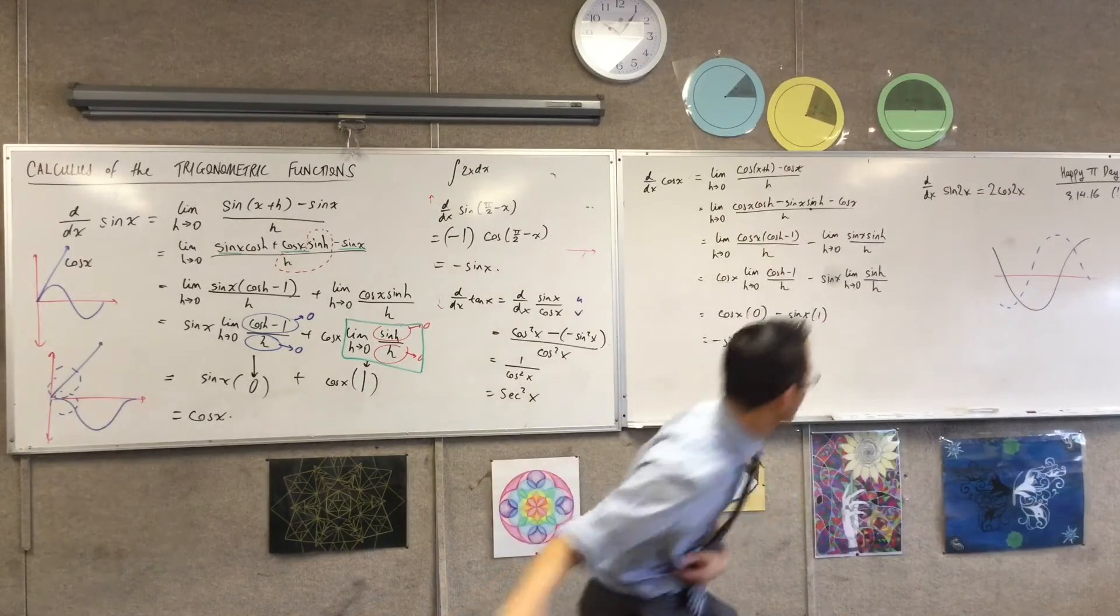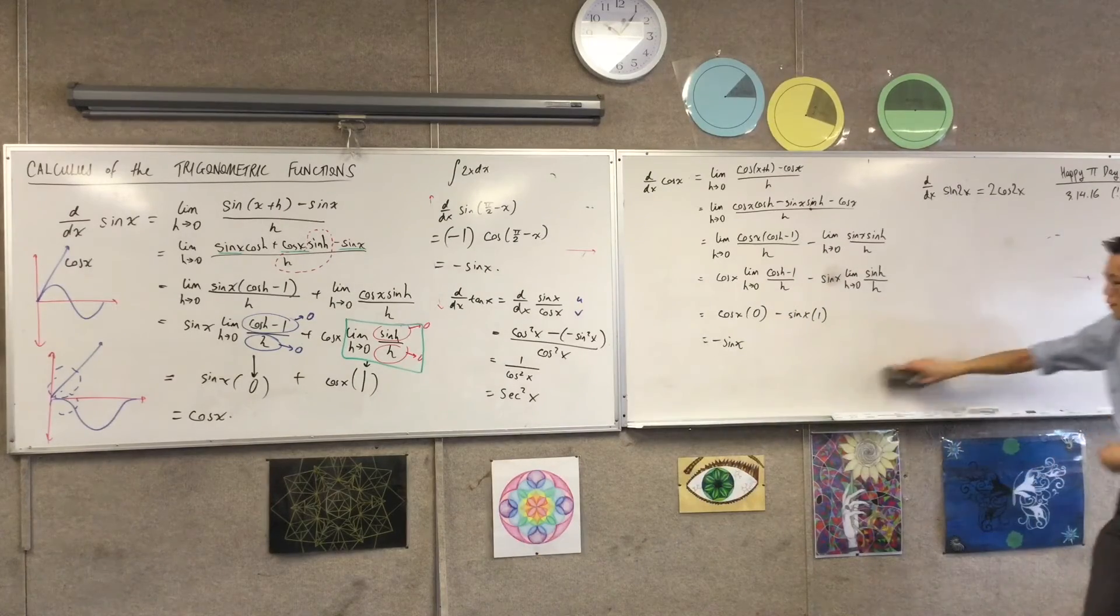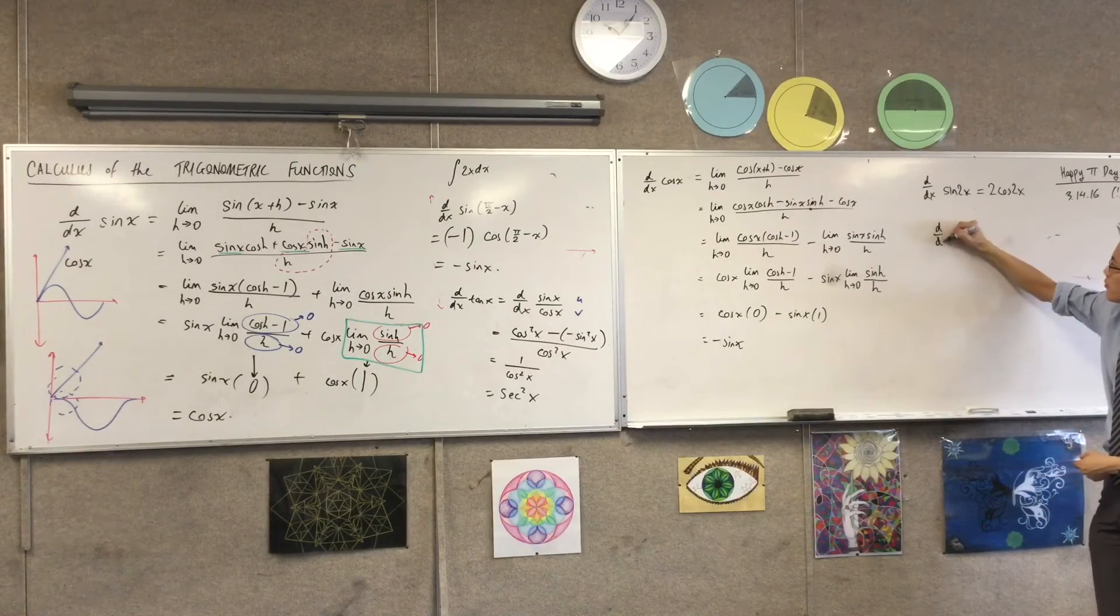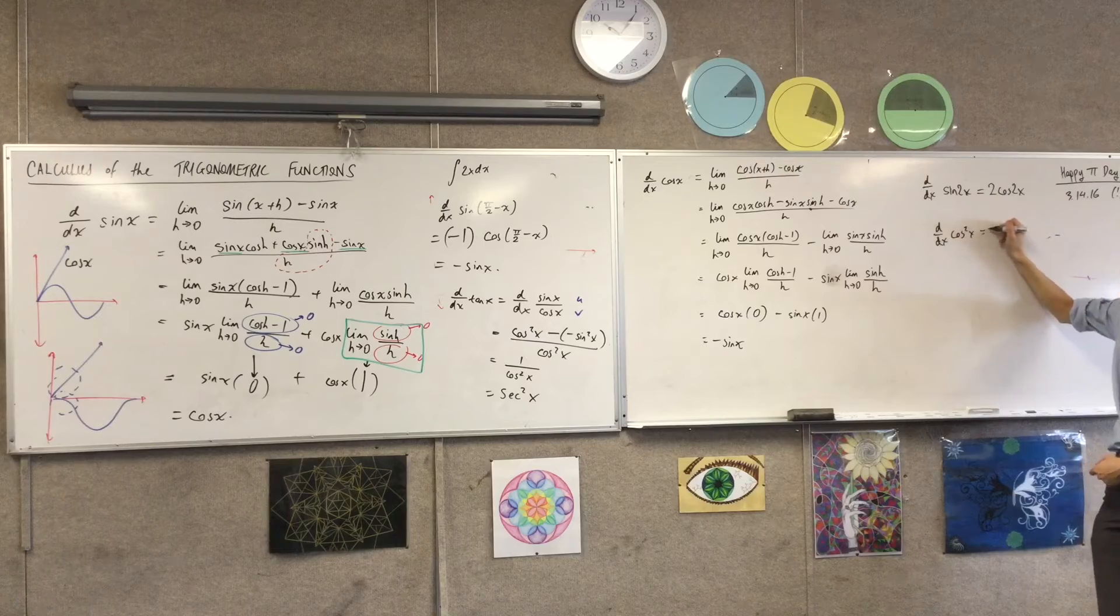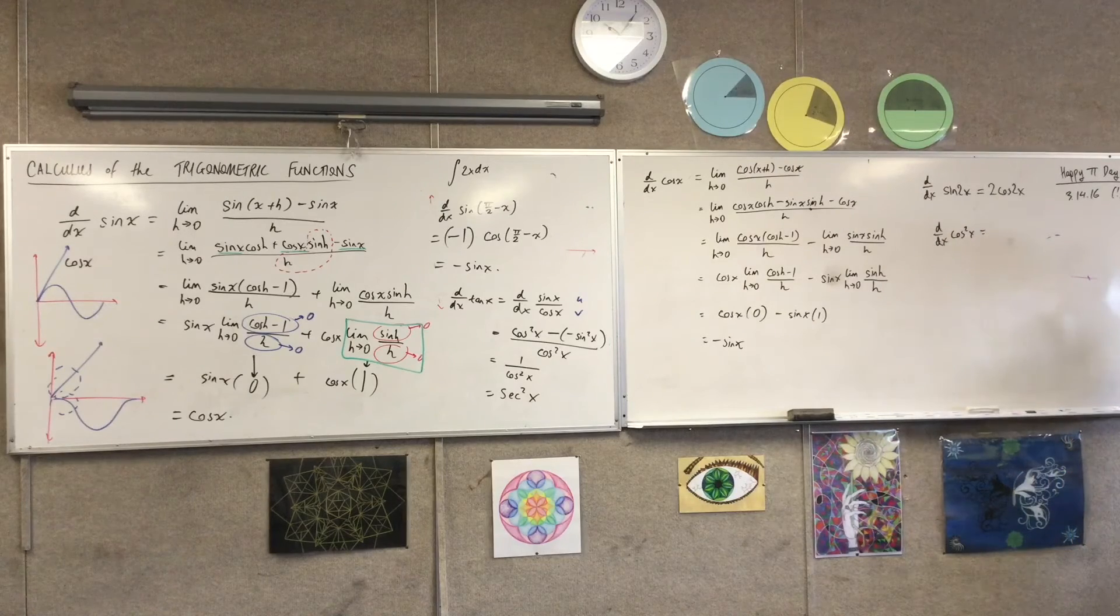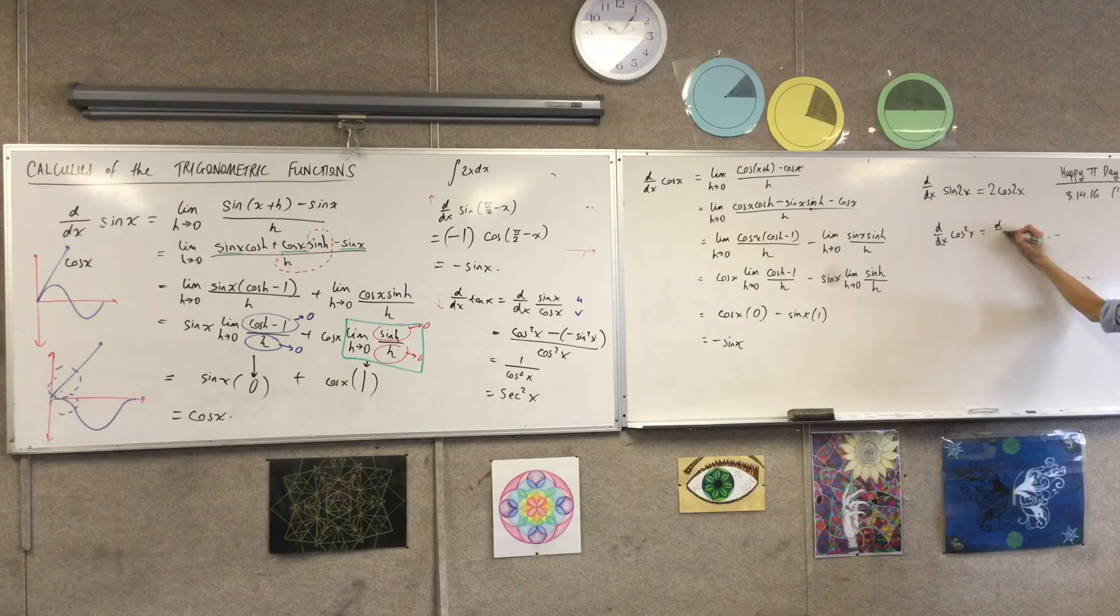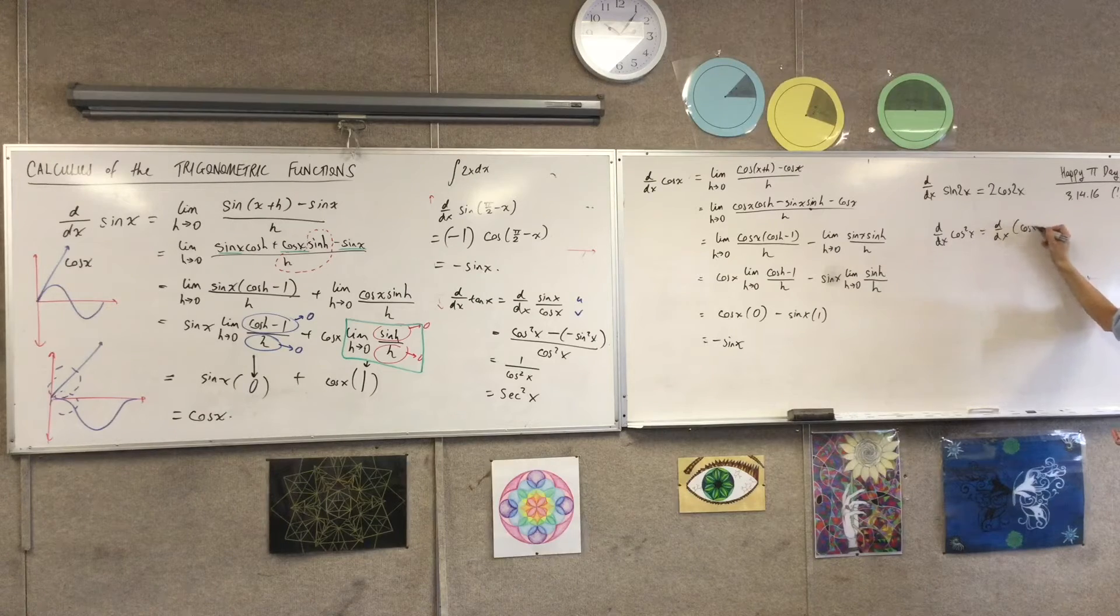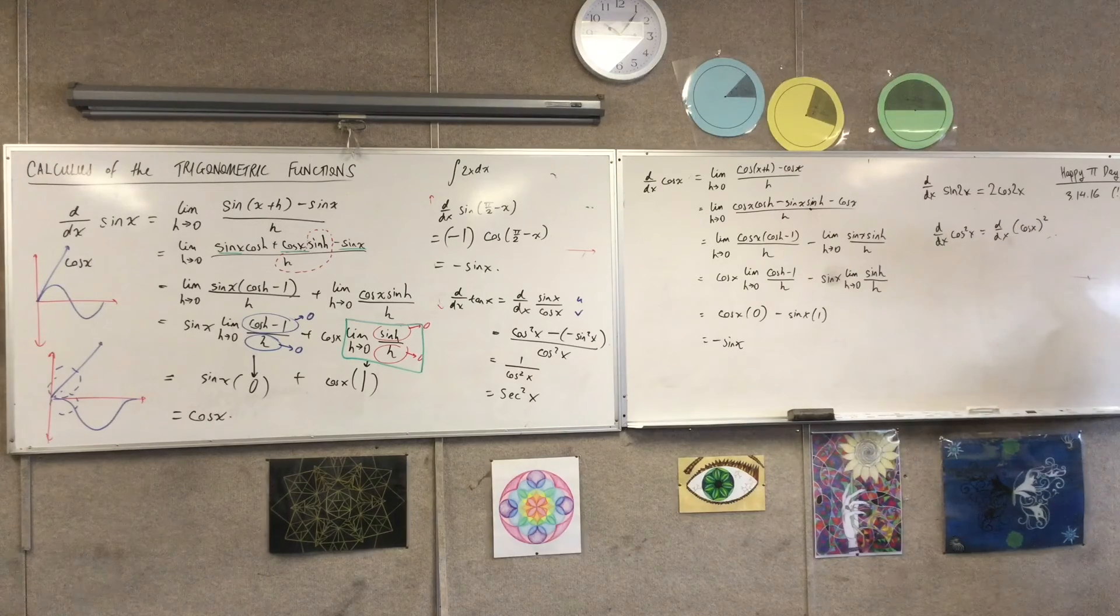How about, how about we do something like this? Can you differentiate for me cos squared? How would you rewrite that? Cos x. This is cos x squared, right? So this is again chain rule, but in a different direction.